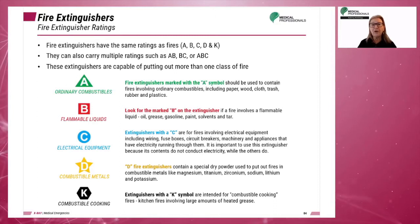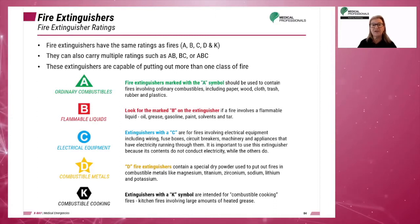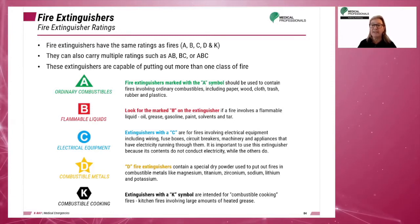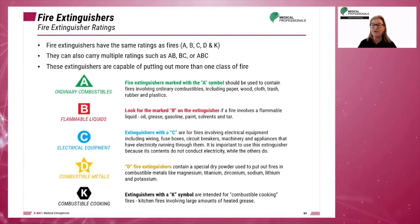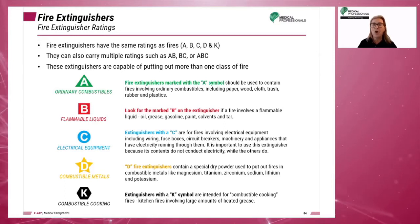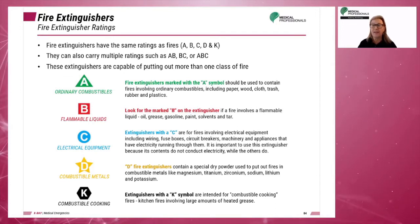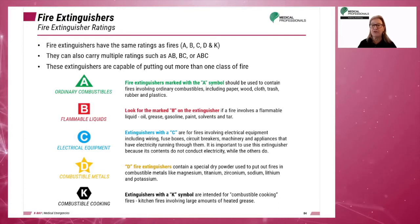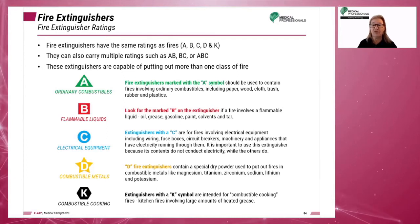A fire extinguisher can also carry multiple ratings such as AB, BC, or ABC. These are multiple-use extinguishers and can be used for different classes of fires. All ratings are shown on the extinguisher faceplate. ABC-rated multi-purpose dry powder extinguishers are the most commonly found fire extinguishers.